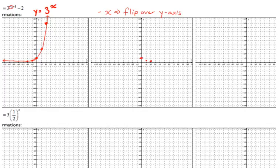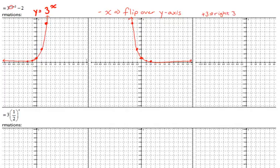The point (0, 1) does not change because it's on the axis. The point (1, 1/3) is now at negative 1, 1/3, and the point (2, 1/9) is now at negative 2, 1/9. That's the first part of our transformation — we're not finished. We're also adding 3 in the exponent, which moves it right 3 units, and subtracting 2 on the end, which moves it down 2.